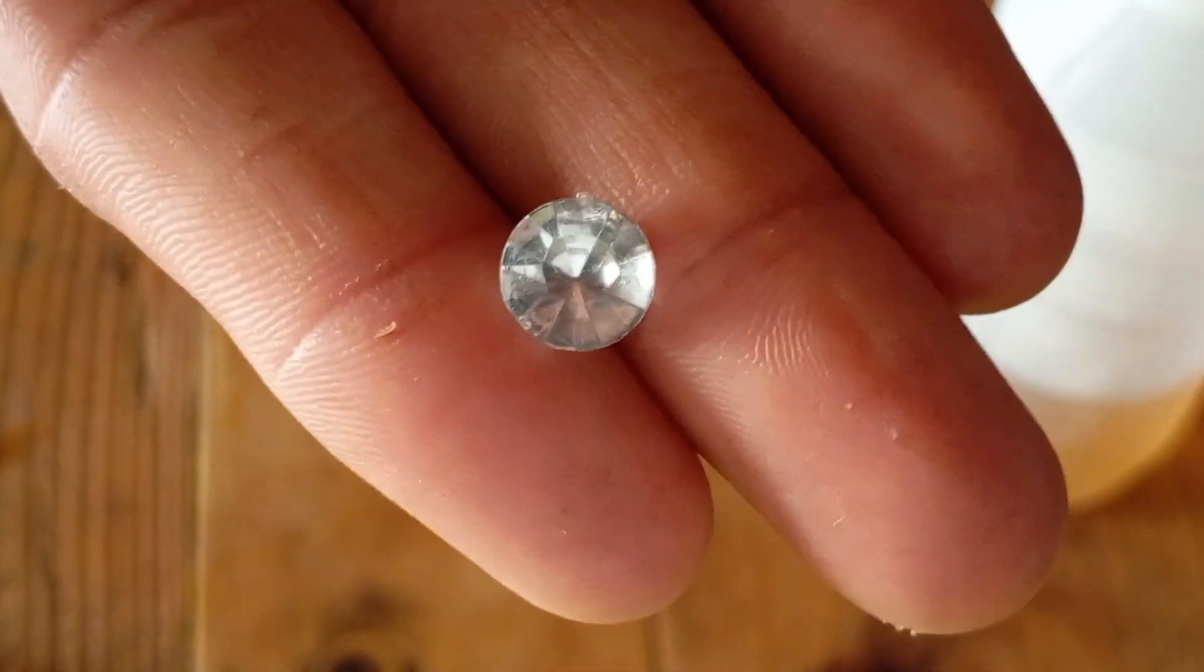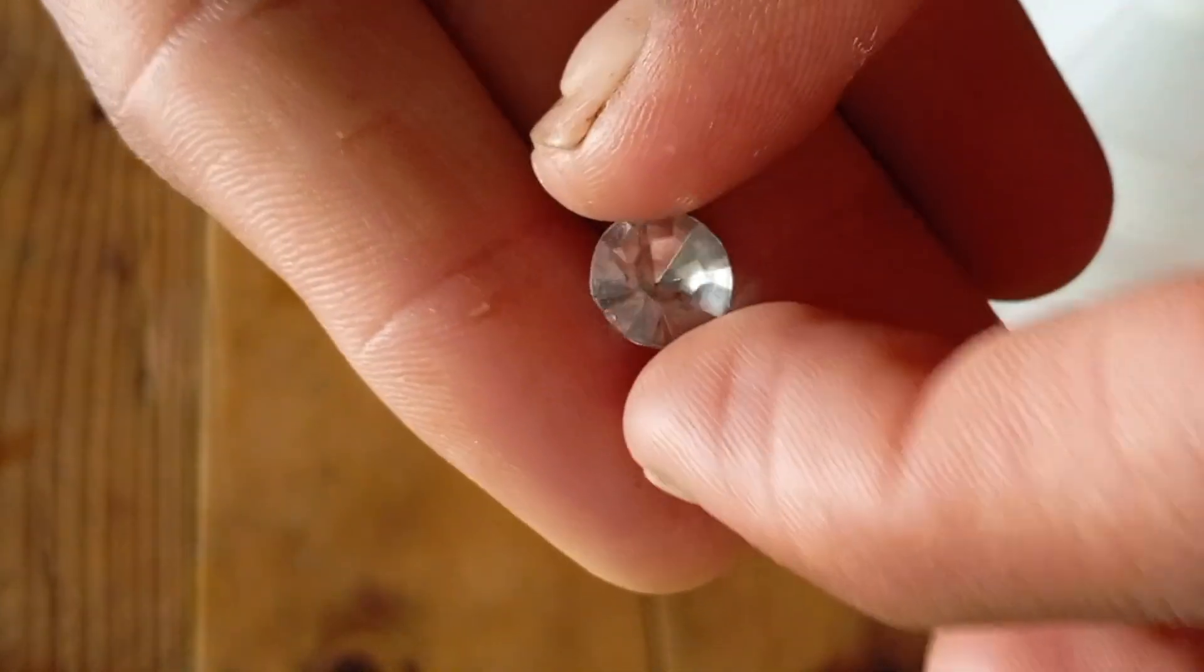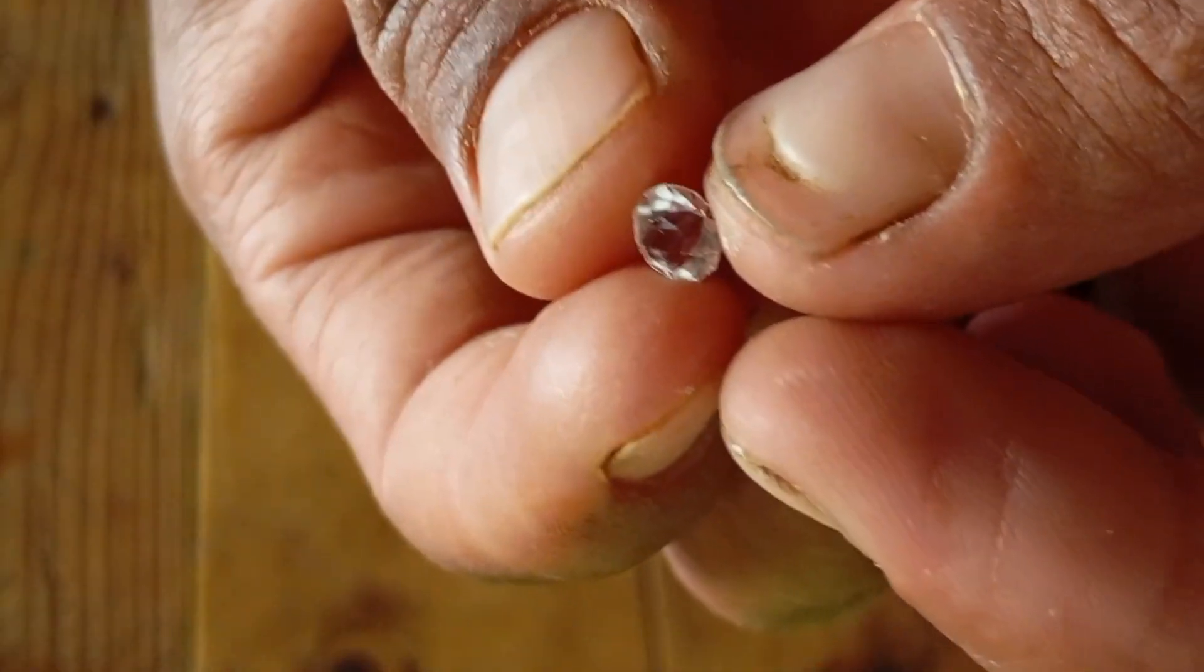The water test. Fill a glass with water and drop the stone in gently. A real diamond will sink to the bottom because of its high density. Fake stones will float or sink slowly. A clear red flag.